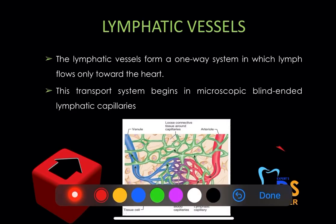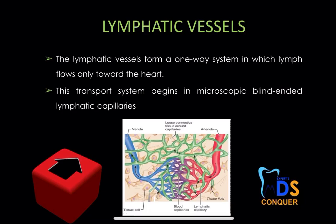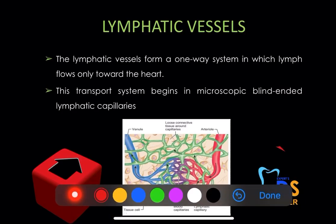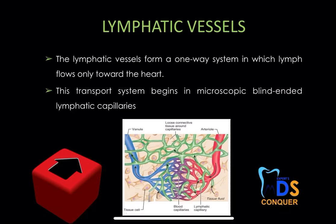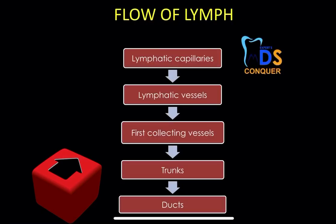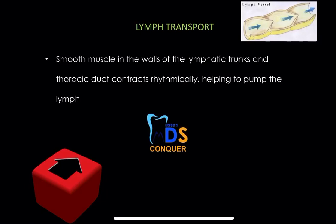The lymphatic vessels are a one-way system in which lymph flows towards the heart. This transport begins in microscopic blind-ended lymphatic capillaries. The flow of lymph is via lymphatic capillaries towards the vessels, towards the trunk, and finally to the ducts. The smooth muscle in the walls of the lymphatic trunks and the thoracic duct contracts rhythmically to help in pumping the lymph.